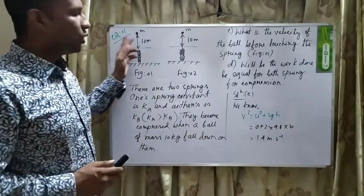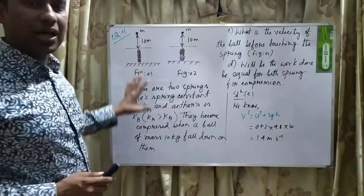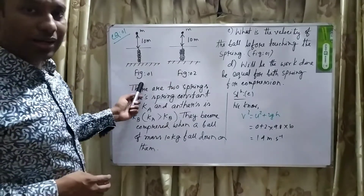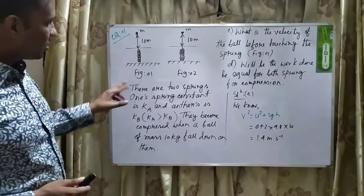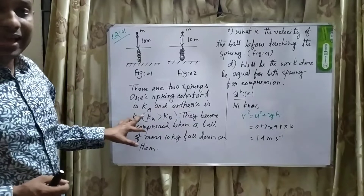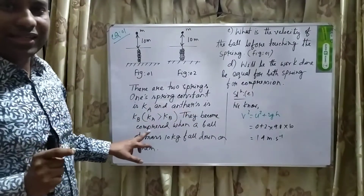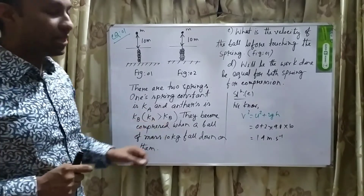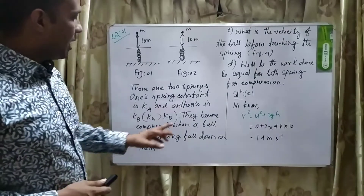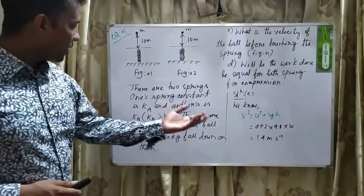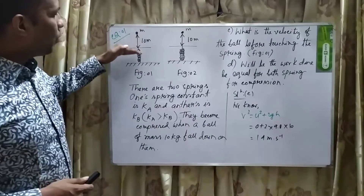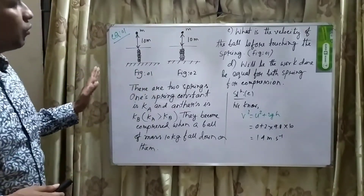This is the first CQ. You can see on the board I have written the question. There is a spring and there is another spring — this is figure number 1 and this is figure number 2. The stem is: there are two springs. One's spring constant is Ka and another's spring constant is Kb. The condition is Ka is greater than Kb, meaning the first spring has the greater spring constant. A ball of mass 10 kg falls down on them, compressing both springs.